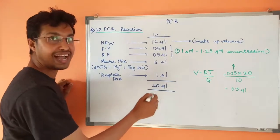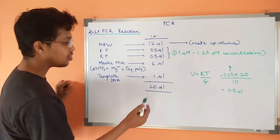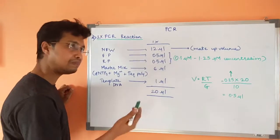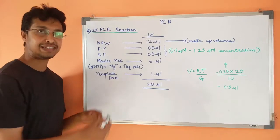Total reaction is of 20 µL. This is how you can make a reaction of 20 µL, 25 µL, 50 µL depending on your purpose. This is how you can set up a reaction.